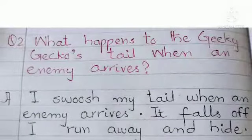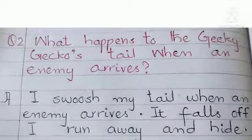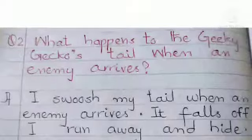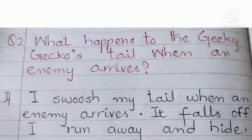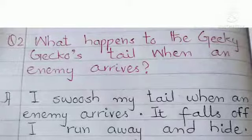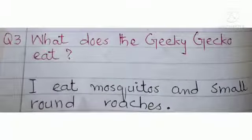Question number two is: What happens to the Jicky Jacko's tail when an enemy arrives? And the answer is: I woosh my tail when an enemy arrives. It falls off, I run away and hide.